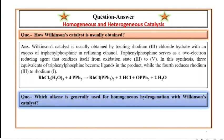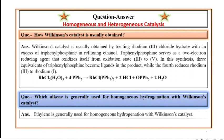Which alkene is generally used for homogeneous hydrogenation with Wilkinson's catalyst? Ethylene is generally used for homogeneous hydrogenation with Wilkinson's catalyst.